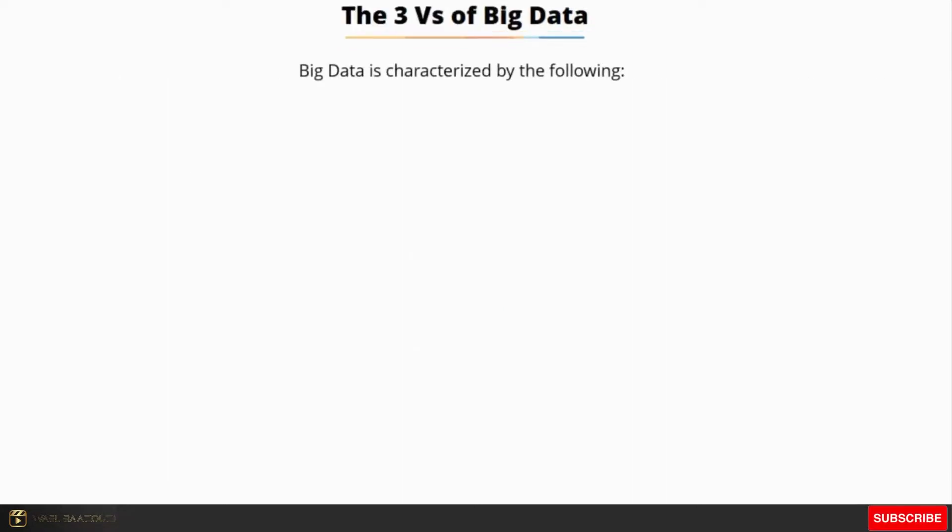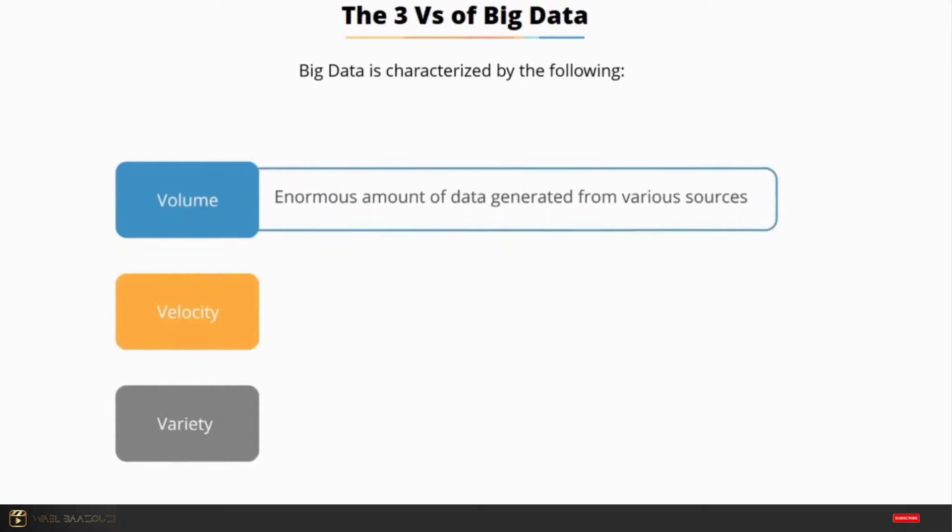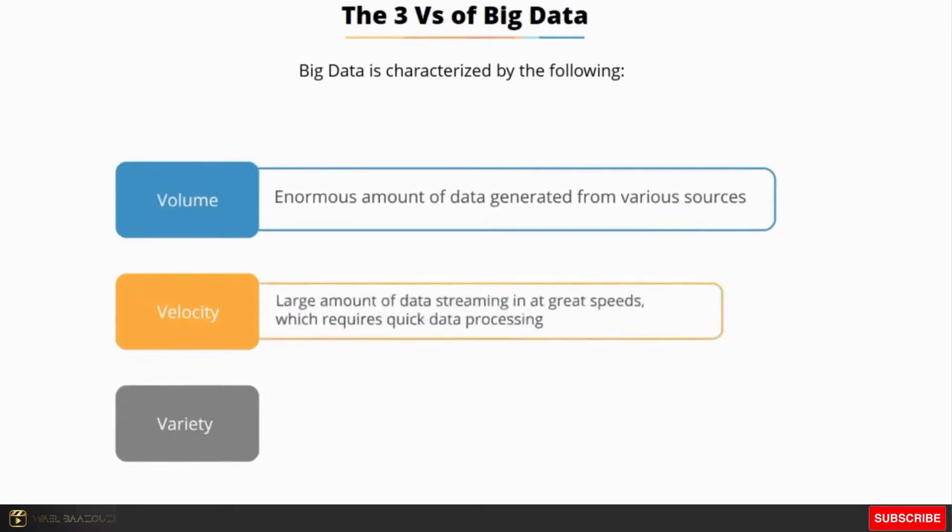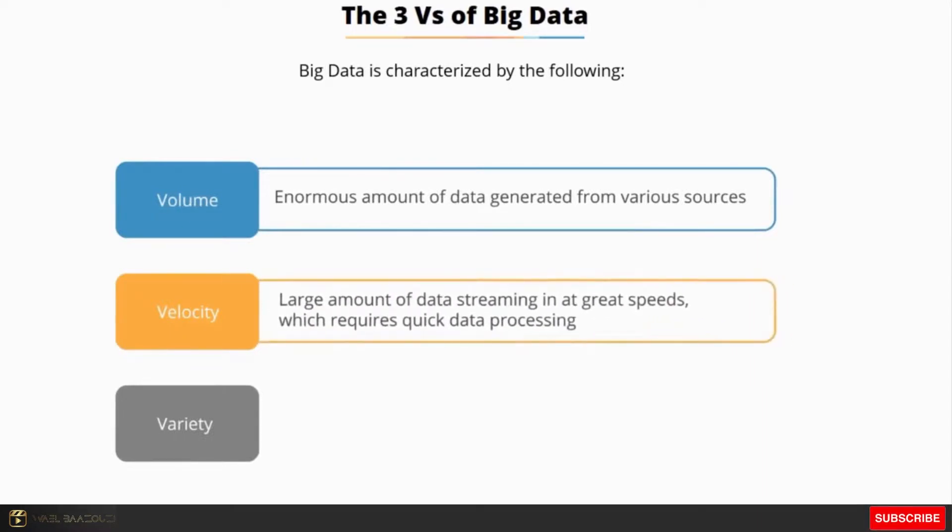Big data is usually referenced by three Vs: volume, velocity and variety. Volume refers to the enormous amount of data generated from various sources. Big data is also characterized by velocity - huge amounts of data flow at a tremendous speed from different devices, sensors and applications. To deal with it, an efficient and timely data processing is required.